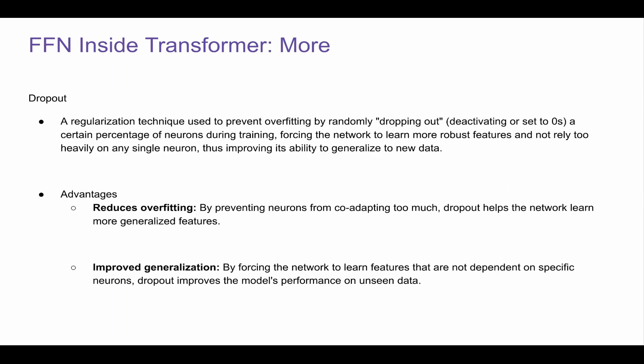So this is not in the graph, but it's a pretty standard exercise that is applying dropout. Dropout is a regularization technique used to prevent overfitting, which is very common in machine learning, by randomly dropping out, that is setting neurons to zero, a certain percentage of neurons during training. This forces the network to learn more robust features and not rely too heavily on any single neuron.